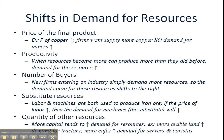There are five different phenomena that could produce a shift in the demand for market resources: the price of the final product, productivity of the resources, the number of buyers for that resource, the substitutability of the resources, and the quantity of other resources that are available at any given time.